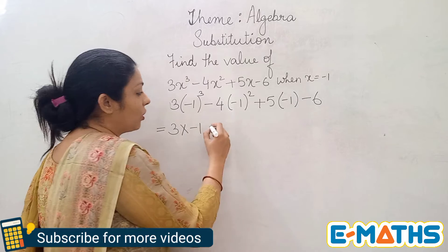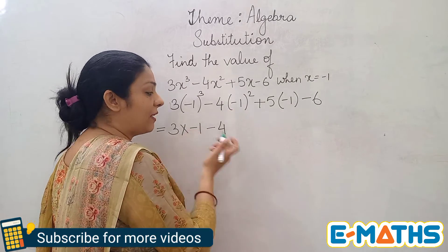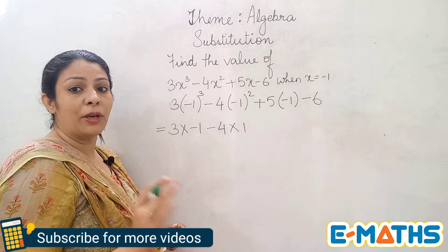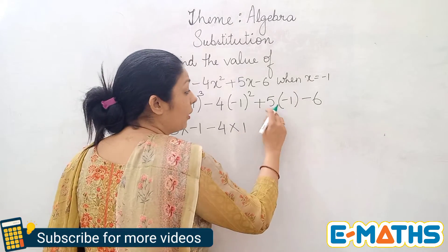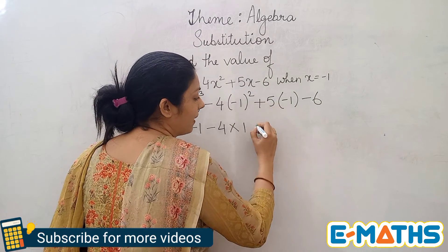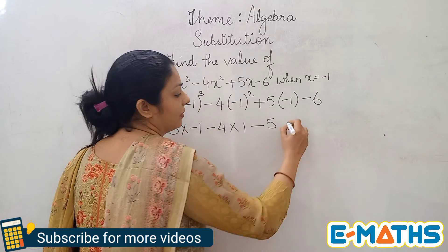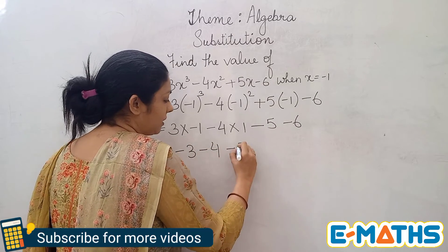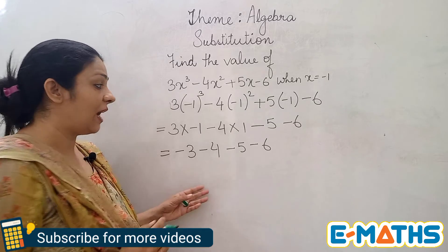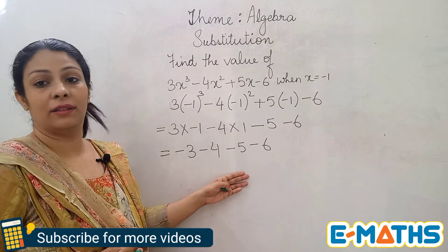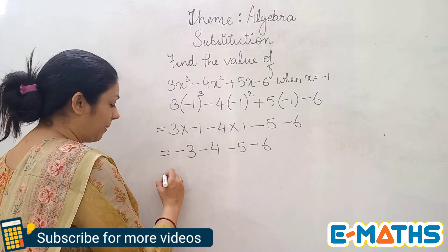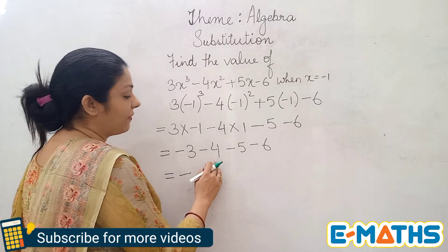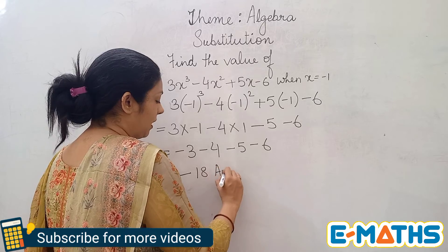Now minus 4 remains. Minus 1 squared becomes positive 1 because the power is an even number — an even power gives a positive integer. Then 5 into minus 1 gives minus 5, so put a minus and write 5, then minus 6. Now we have minus 3, minus 4, minus 5, and minus 6. All numbers are negative, so just add them up — your answer will definitely be negative. 4 plus 3 is 7, plus 5 is 12, plus 6 is 18. So minus 18 is our answer.